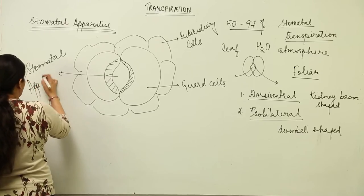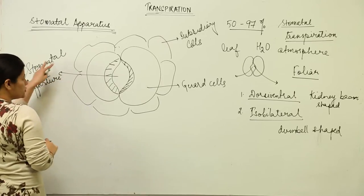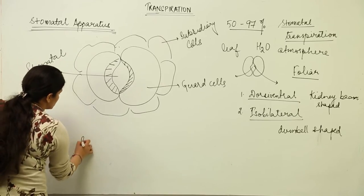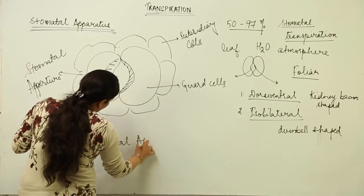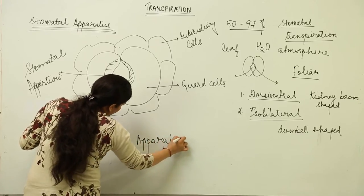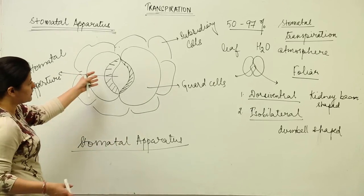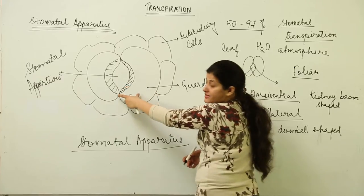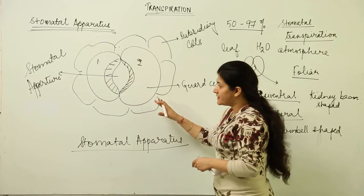You need to memorize this diagram from an exam point of view: the stomatal aperture, subsidiary cells, and guard cells together make up the stomatal apparatus. The stomatal apparatus consists of subsidiary cells and a pair of guard cells — guard cell number one and guard cell number two.